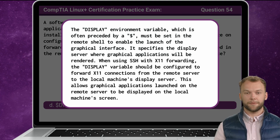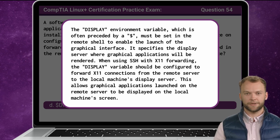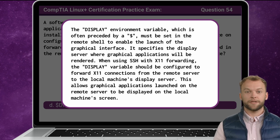The $DISPLAY environment variable must be set in the remote shell to enable the launch of the graphical interface. It specifies the display server where graphical applications will be rendered. When using SSH with X11 forwarding, the DISPLAY variable should be configured to forward X11 connections from the remote server to the local machine's display server, allowing graphical applications launched on the remote server to be displayed on the local machine's screen.